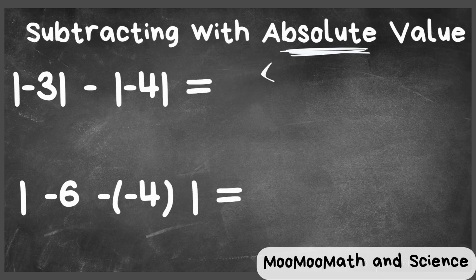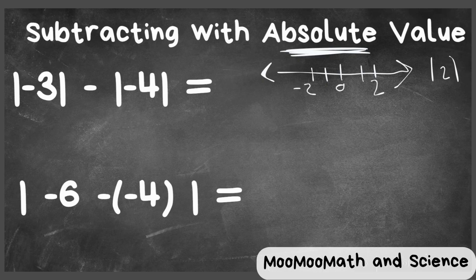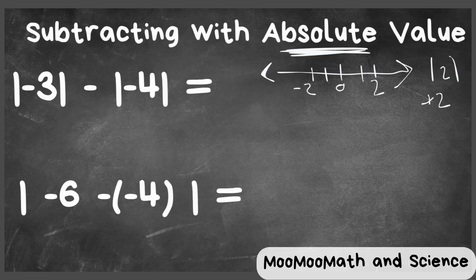Friendly reminder: absolute value is the distance from zero. So here's zero. If you have an absolute value of two, a positive two is two places from zero, and a negative two is two places from zero. So it's a positive value.